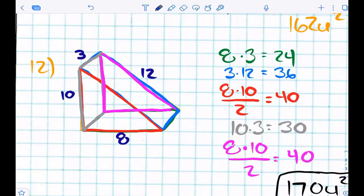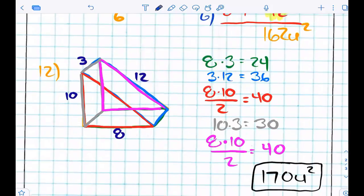Same thing here. How many faces does this shape have? Five. We have two triangles, a bottom, a back, and like the little ramp piece. So you're going to find the area of all of the faces and add them together.